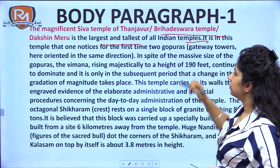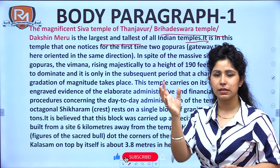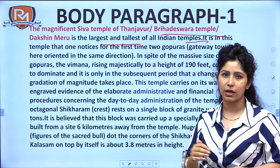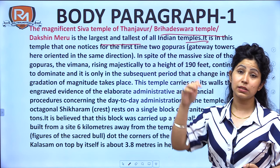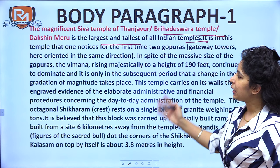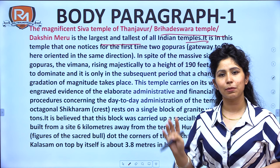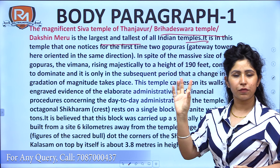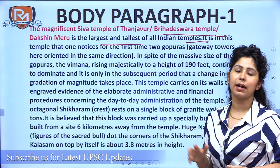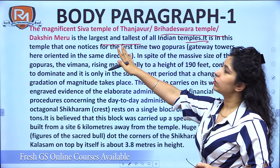The Brihadeshwara temple is one of the largest and tallest temples in India. It is said that the large carving on top required a six-kilometer-long pavement to be constructed so that the granite block could be safely pulled up to that height — that is why its architecture is extremely important. It has two Gopurams facing each other. Gopurams are very important in South Indian temple architecture. In the Brihadeshwara temple, the Gopurams, Vimanas, and the Kalash on top — a 3.5-meter granite block — are all very significant. It became so famous that it came to be known as the Dakshin Meru.